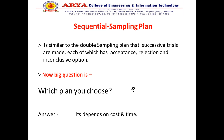The third is the sequential sampling plan. It is similar to the double sampling plan in that successive trials are made, each of which has acceptance, rejection, and inconclusive options. The key question is which type of plan to choose, and it depends on the cost and time. Thank you.